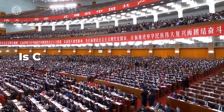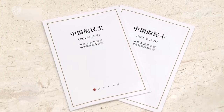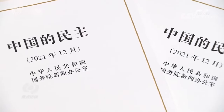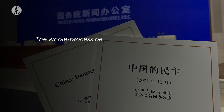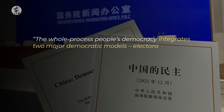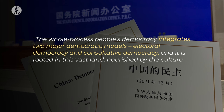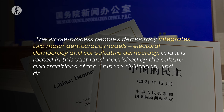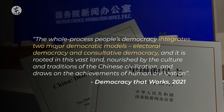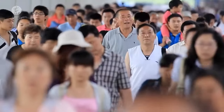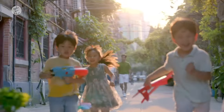Having said all of this, is China a dictatorship or not? A white paper published last year by the government called Democracy That Works highlights whole-process people's democracy as a core concept. The document also says: whole-process people's democracy integrates two major democratic models, electoral democracy and consultative democracy, and it is rooted in this vast land nourished by the culture and traditions of the Chinese civilization and draws on the achievements of human civilization. So the Chinese people may not cast their ballots for their president every few years, as in Western-style democracy, but nor do the Chinese people live in a dictatorship.